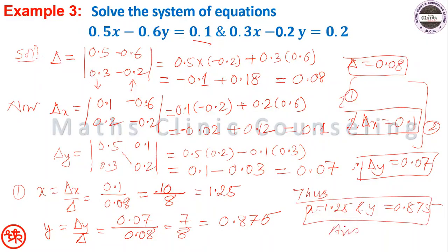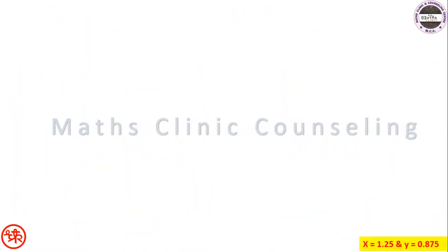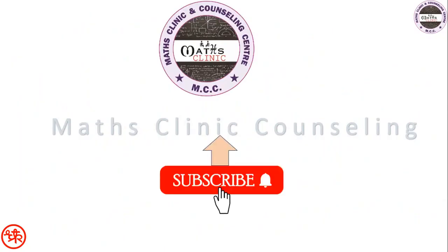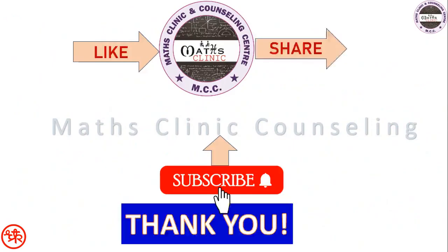Dear students, these were the examples on Cramer's rule for a linear system of 2 by 2 equations. If you followed this properly, please subscribe to the YouTube channel Maths Clinic Counseling Center, and like and share it. Thank you.